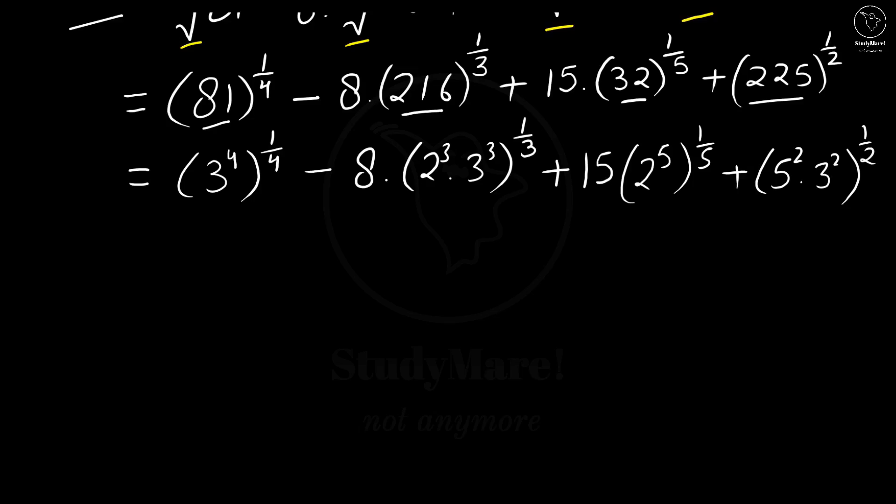Now, simplifying it further. Again, we have lots of exponents. So we are going to use one more identity. Rather, if you look at the complete expression we will need 2 different identities. One is a to the power m to the power n is equal to a to the power m into n.